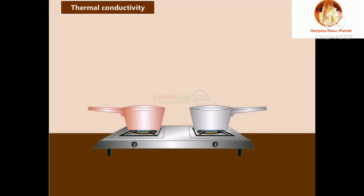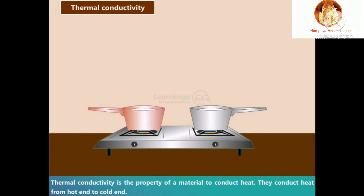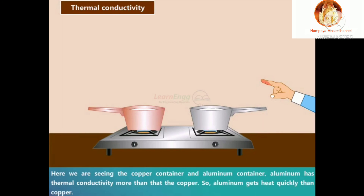Thermal conductivity is the property of a material to conduct heat. Metals conduct heat from the hot end to the cold end. Here we are seeing a copper container and an aluminium container. Aluminium has thermal conductivity greater than that of copper, so aluminium gets hot more quickly than copper.